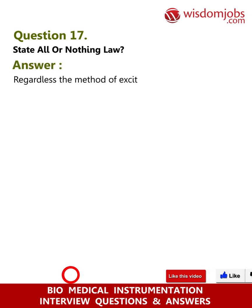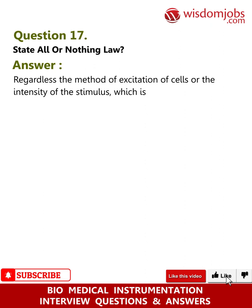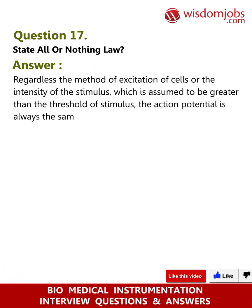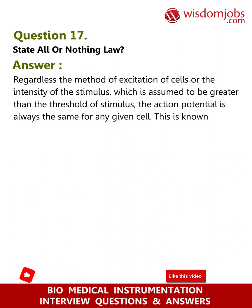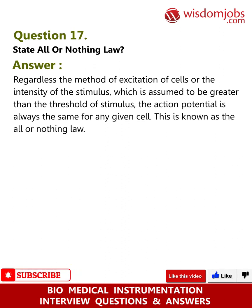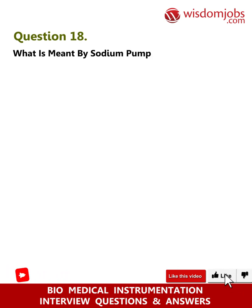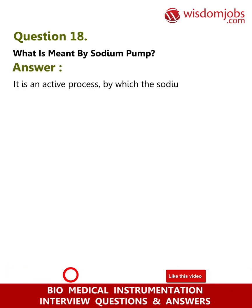Question 17: State the all-or-nothing law. Answer: Regardless of the method of excitation of cells or the intensity of the stimulus, which is assumed to be greater than the threshold of the stimulus, the action potential is always the same for any given cell. This is known as the all-or-nothing law.